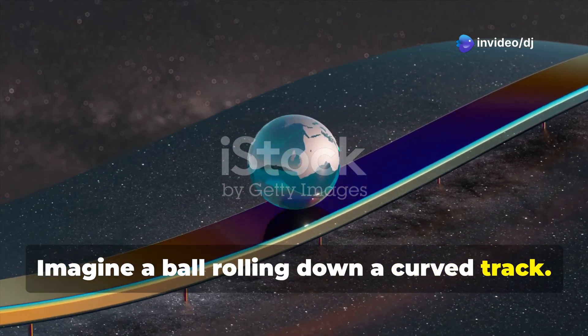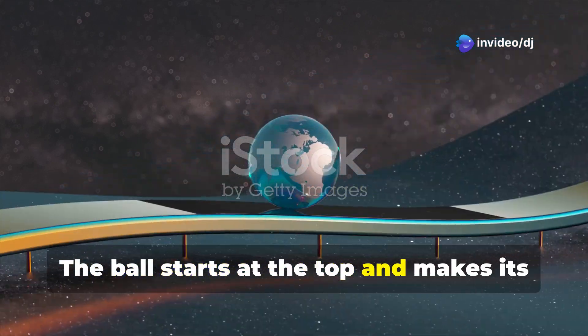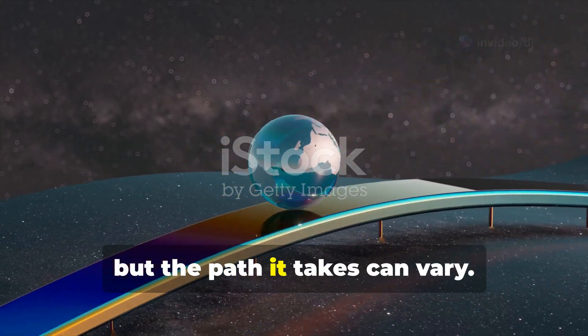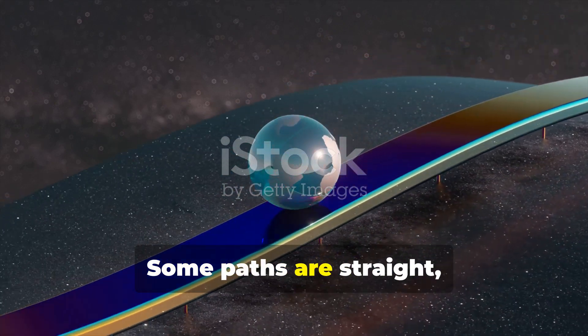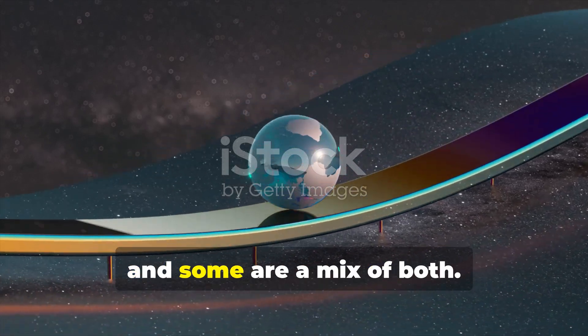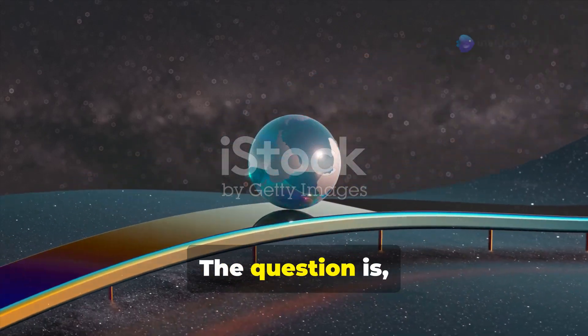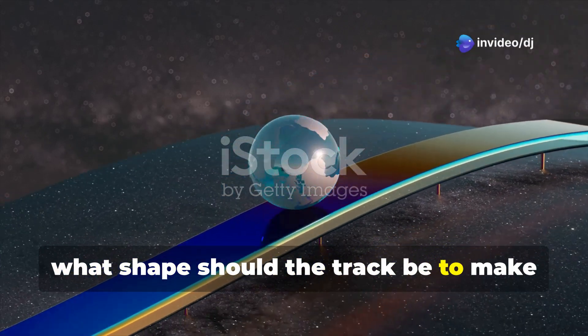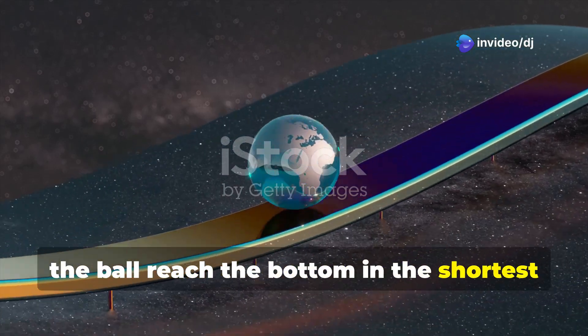Imagine a ball rolling down a curved track. The ball starts at the top and makes its way to the bottom, but the path it takes can vary. Some paths are straight, some are curved, and some are a mix of both. The question is, what shape should the track be to make the ball reach the bottom in the shortest amount of time?